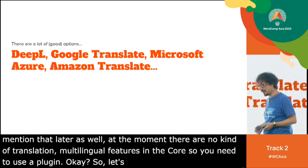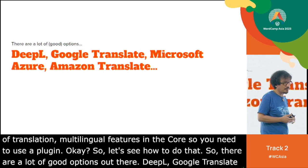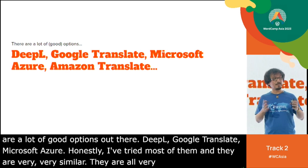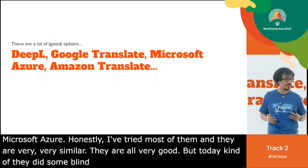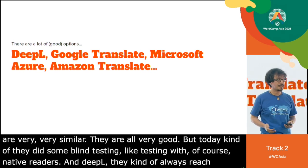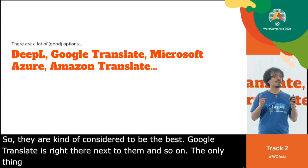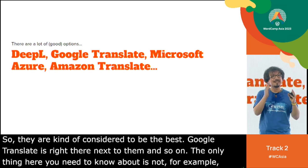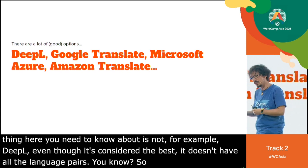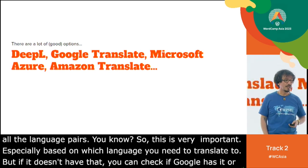There are a lot of good options for translation engines: DeepL, Google Translate, Microsoft Azure. I've tried most of them and they're very similar — they're all very good. But in blind testing with native readers, DeepL tends to reach the top and is considered the best. Google Translate is right there next to them. The one thing to know is that DeepL, even though it's considered the best, doesn't have all language pairs. So check which engine supports the language you need — if DeepL doesn't have it, Google or Microsoft definitely will.